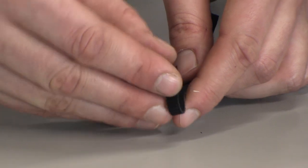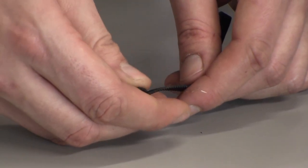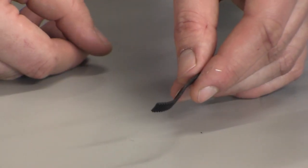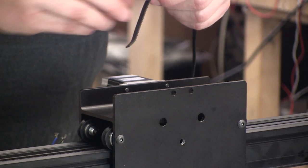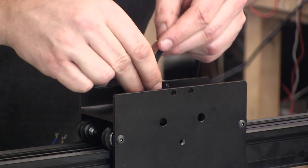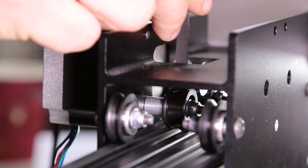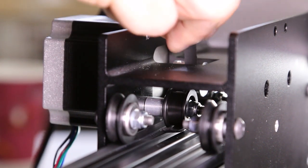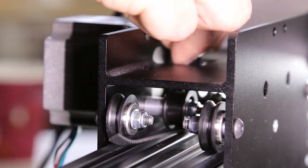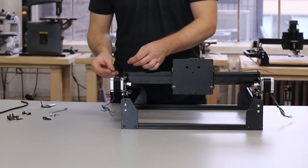Now we're going to take one length of the GT2 belting and curl the end. You want to curl the smooth part so that we can thread it through here. The belt needs to go between the pulley and the idler and underneath the idler to the outside. Make sure that the teeth of the belt are facing down and touching the maker slide.